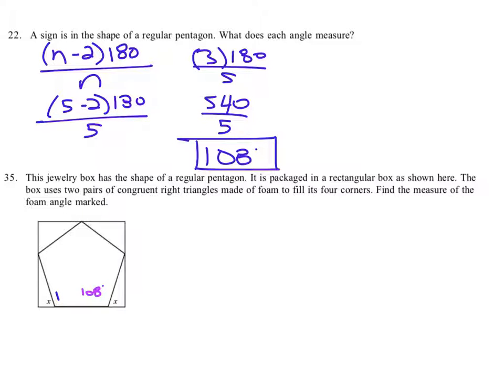So we label all five angles as 108 degrees around the pentagon.